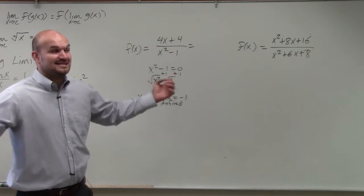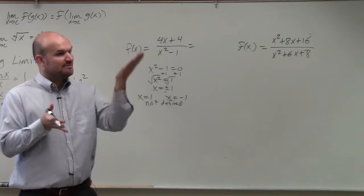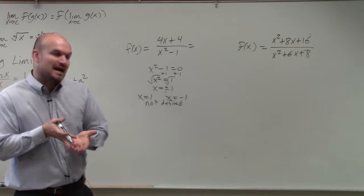But remember, they can be not defined in a couple ways. They could be a hole or they could be an asymptote. So a hole can be factored out. Asymptotes cannot be factored out.